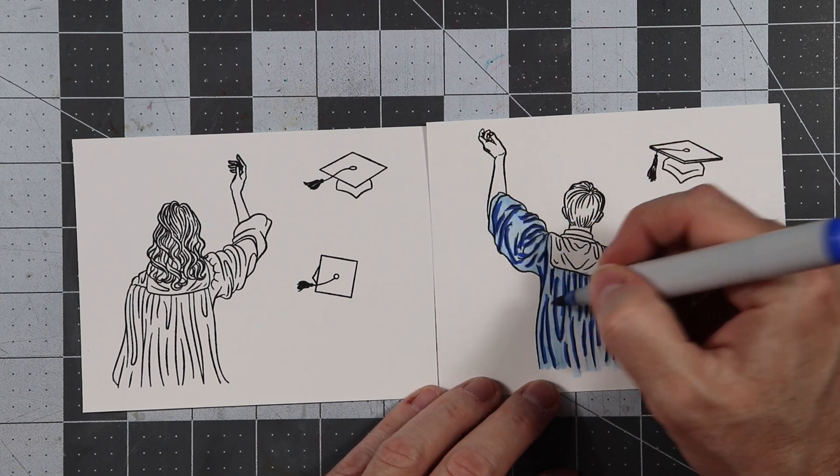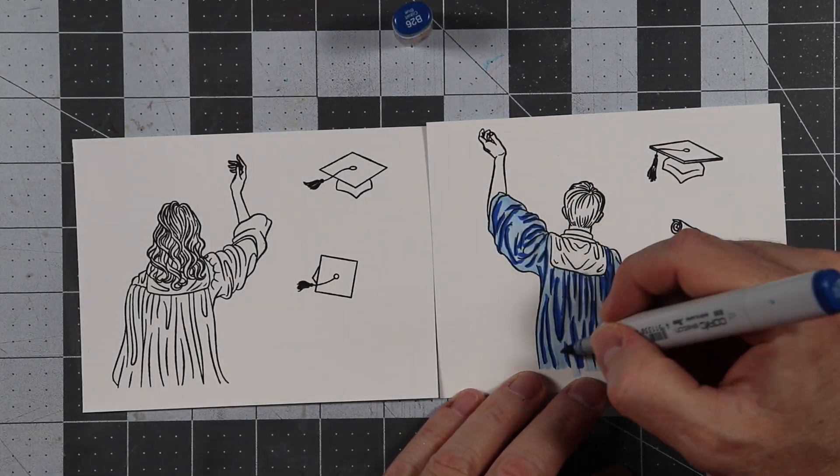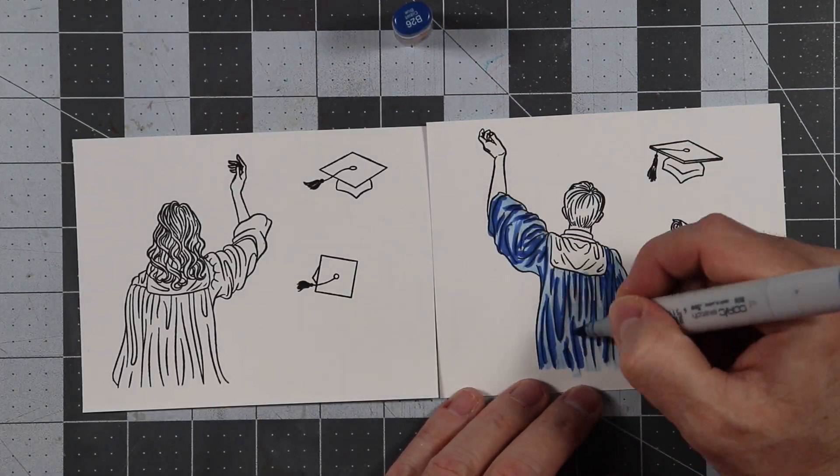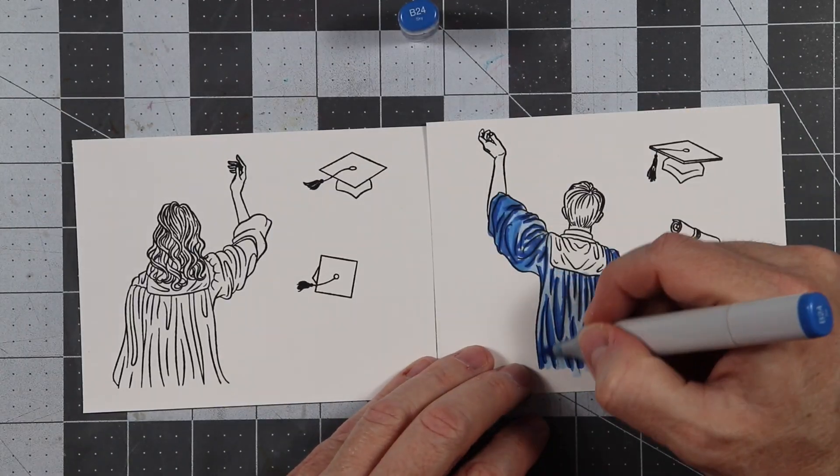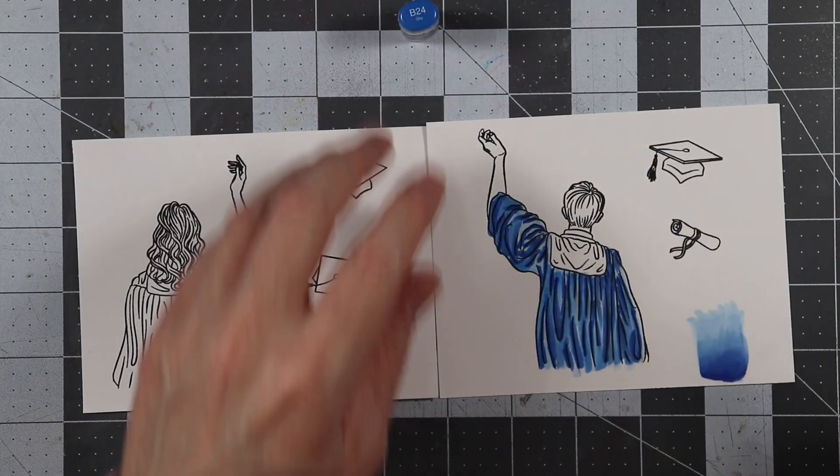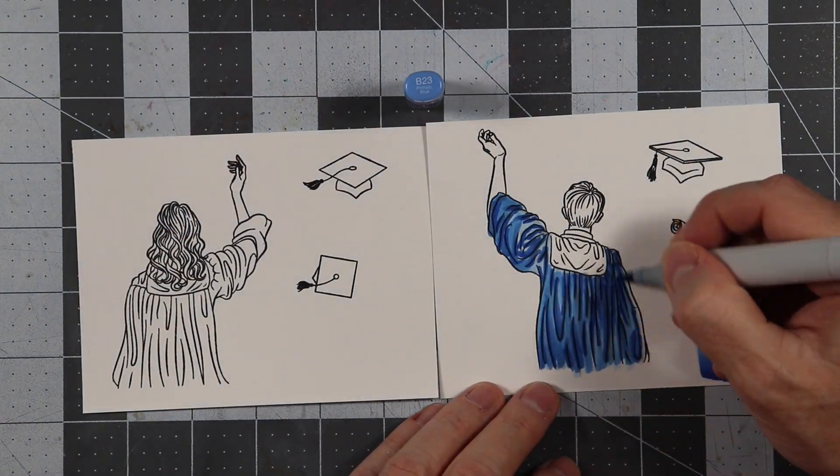I'm just going to use some various blues here, and I'm just going to go back and forth from the lightest to the darkest and then from the darkest to the lightest. I'll keep doing that until the gown is completely full.